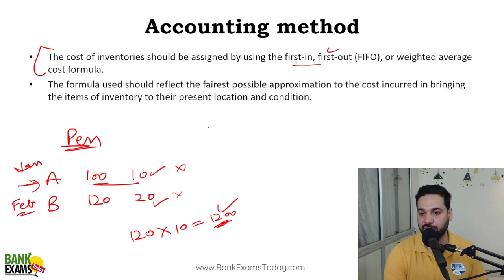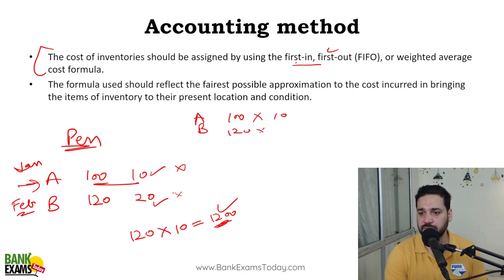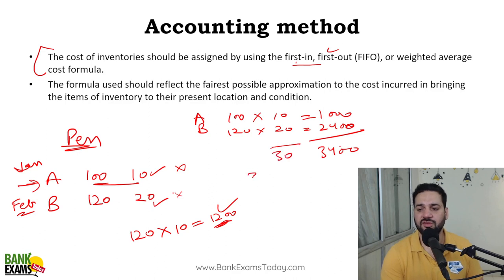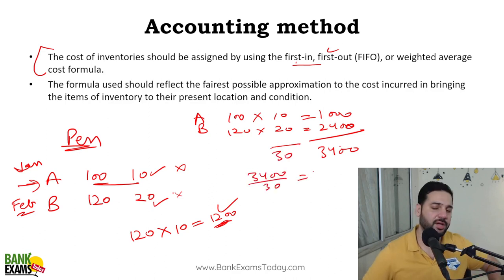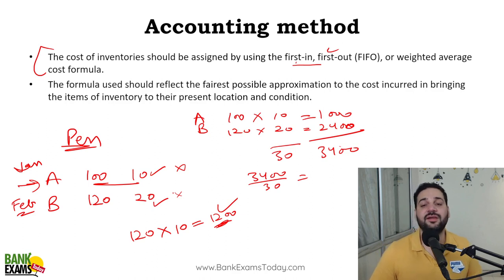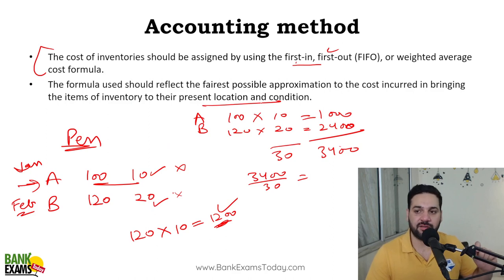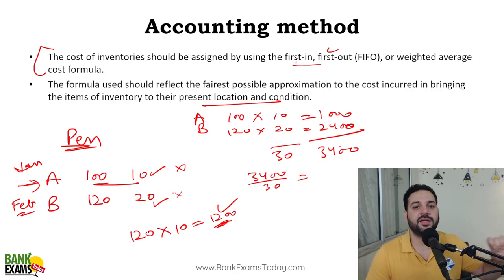The weighted average method is another allowed approach. Using the same example — 10 kg at ₹100 and 20 kg at ₹120 — the weighted total cost is ₹3,400 and total weight is 30 kg. Dividing 3,400 by 30 gives the per-kg weighted average value. Whichever formula you use — FIFO or weighted average — it should reflect the fairest possible approximation to the cost incurred in bringing inventory to its present location.